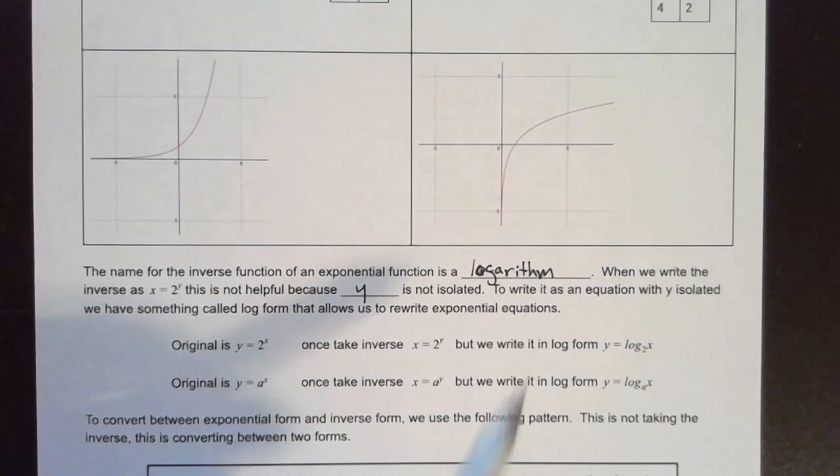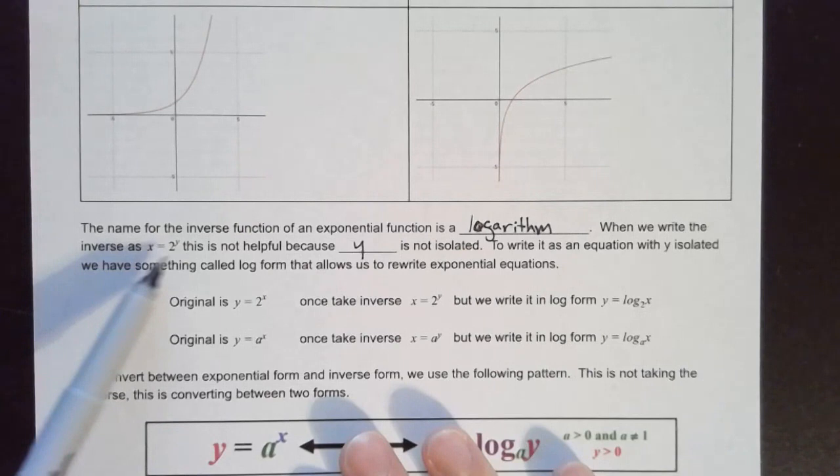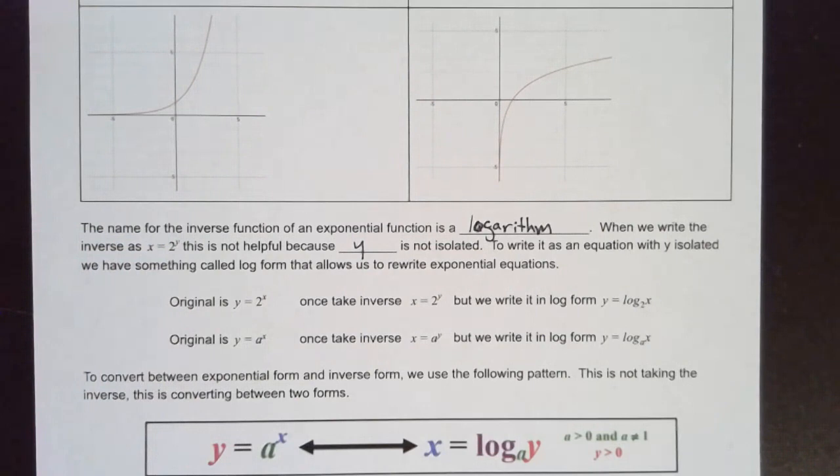Log form allows us to rewrite exponential equations. After we've switched the variables — Y and X — so now we have X here and Y here, the next thing we would want to do is solve for Y, get Y by itself.